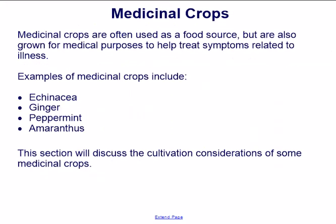Medicinal crops are often used as a food source but are also grown for medical purposes to help treat symptoms related to illness. Examples of medicinal crops include echinacea, ginger, peppermint, and amaranthus. This section will discuss the cultivation considerations of some medicinal crops.